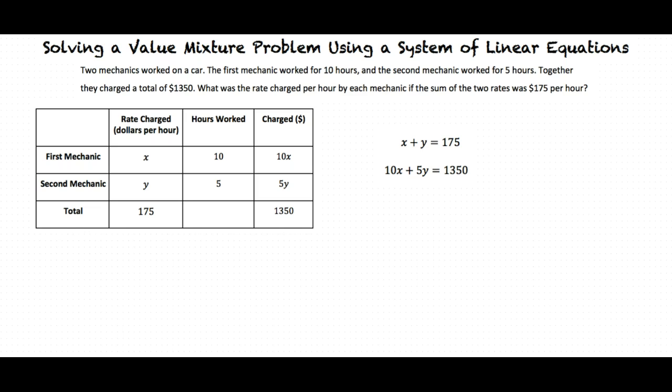Now we can solve for x and y. First, we will want to multiply this entire equation, x plus y equal to $175, by some number that will allow us to cancel out either x or y when we add the two equations. Okay. So since we have 5y in the other equation, we can multiply this one by negative 5, right? So that we can subtract 5y from 5y.